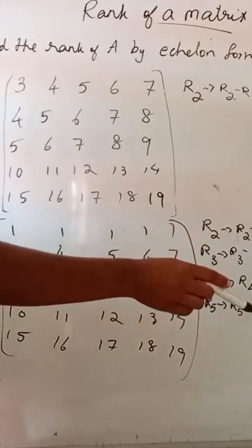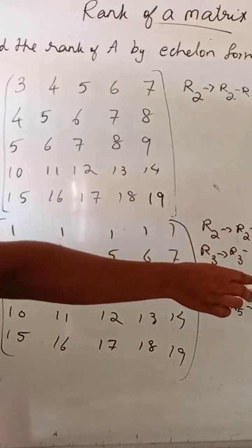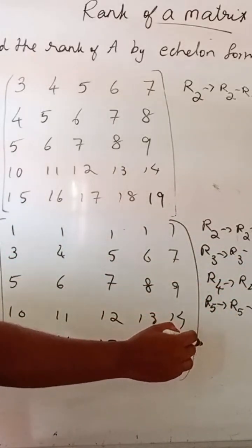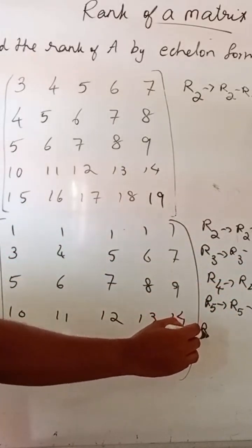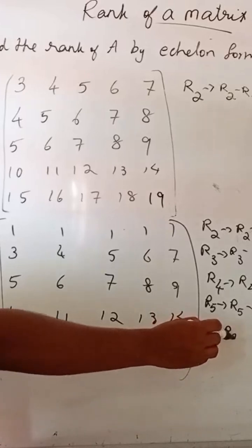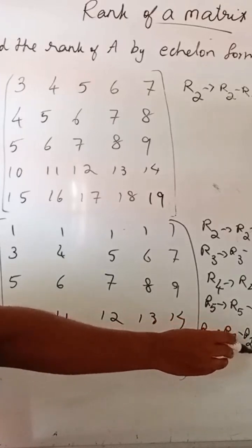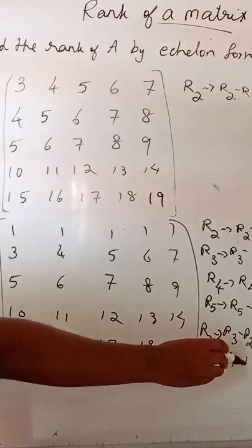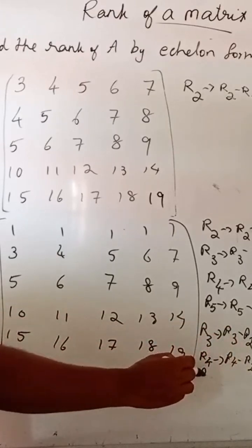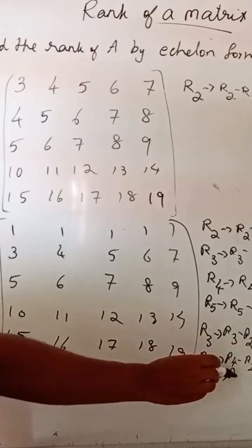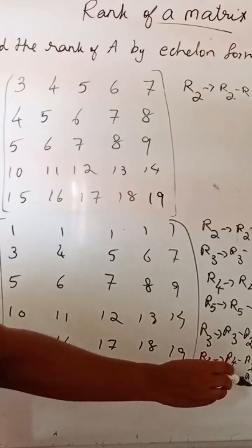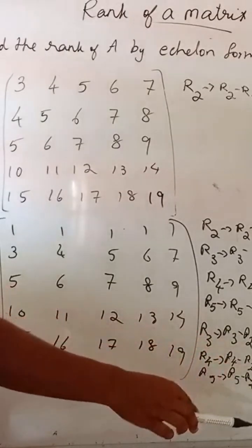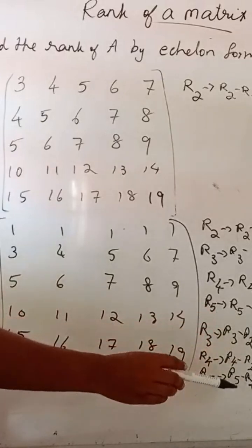So, here we can make these 3 rows 0, that is by doing the operation R3 implies R3 minus R2, then R4 implies R4 minus R2. So, here 3 rows are equal to 0.